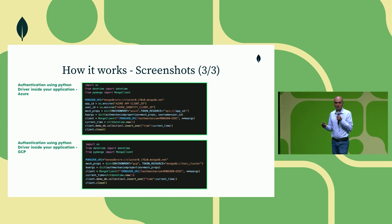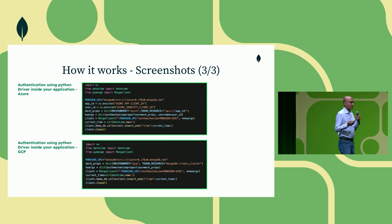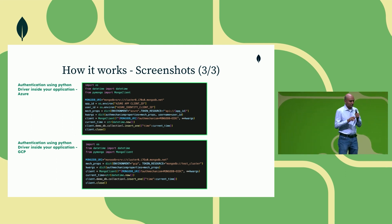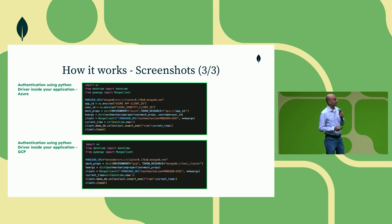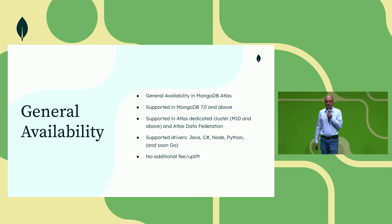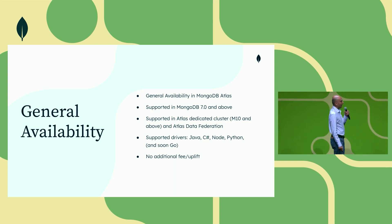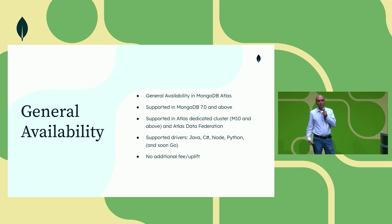Workload federation allows you to manage application identities directly within your existing identity management frameworks such as GCP or Azure, without separately managing SCRAM credentials or X.509 credentials. This feature will also be generally available later this month. It is supported for MongoDB 7.0 and beyond, Atlas dedicated clusters M10 and beyond, and Java, C#, Node, and Python drivers. Like workforce federation, there is no additional fee.